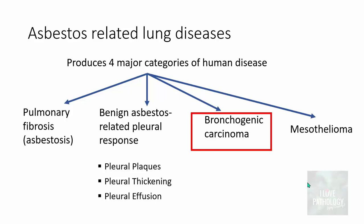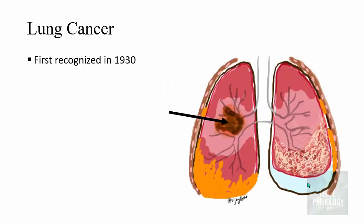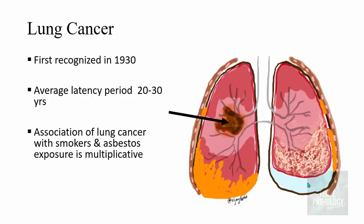The third category is bronchogenic carcinoma. Asbestos fibers act as tumor initiators and tumor promoters, resulting in malignancy. Bronchogenic carcinoma involves the lung parenchyma itself and was first recognized in 1930. The average latency period is around 20 to 30 years. The association of lung cancer with smoking and asbestos is multiplicative — asbestos exposure augments the tumorigenesis from smoking. The most important histological types in asbestos-exposed individuals are adenocarcinoma and squamous cell carcinoma.